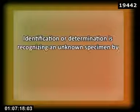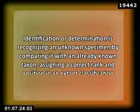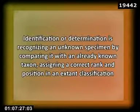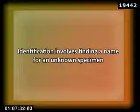2. Identification or Determination is recognizing an unknown specimen by comparing it with an already known taxon, and assigning a correct rank and position in an existing classification. In practice, it involves finding a name for an unknown specimen. This may be achieved by visiting a herbarium and comparing unknown specimens with the duly identified specimens stored there. Alternatively, the specimen may also be sent to an expert in the field who can help in its identification.